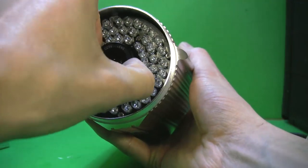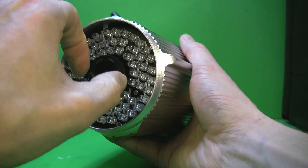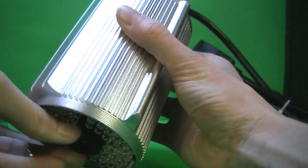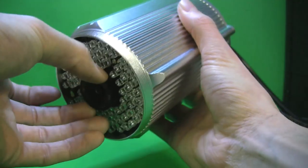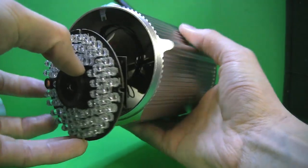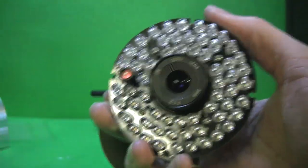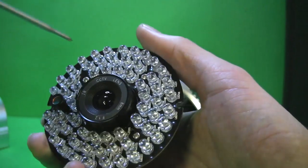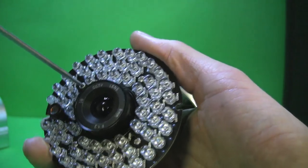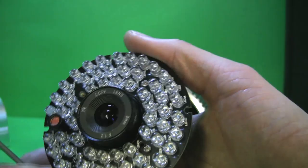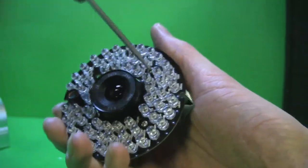Once you get the four screws removed, then pull out by the lens and the infrared board will come out of the housing. Once you get it out, then there will be four more screws on the inside. You'll see them amongst all the infrared lights. This allows the lens to be attached from the infrared board.